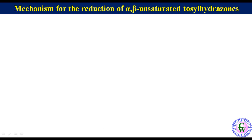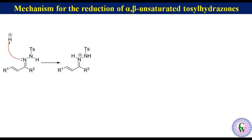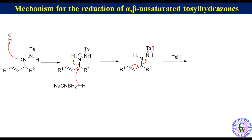Mechanism for reduction of alpha-beta unsaturated tosylhydrazone under Hutchins modified conditions: The alpha-beta unsaturated tosylhydrazone in the presence of acid catalyst gets protonated. Due to the presence of positive charge on nitrogen, the C=N double bond becomes more reactive towards attack by even a mild hydride transferring agent like sodium cyanoborohydride. Hydride transfer produces N-allylic tosylhydrazone, which eliminates para-toluenesulfenic acid to produce an allylic diazene. This allylic diazene undergoes 1,5-hydride migration from nitrogen to carbon to generate the alkene with a migrated double bond.